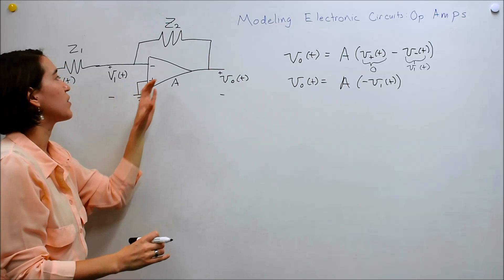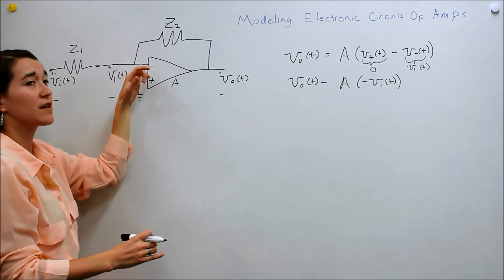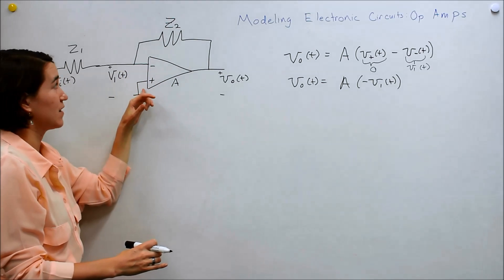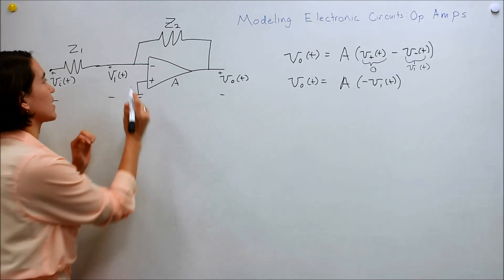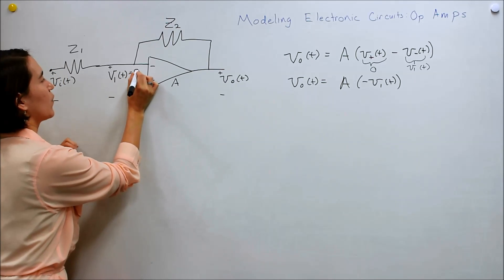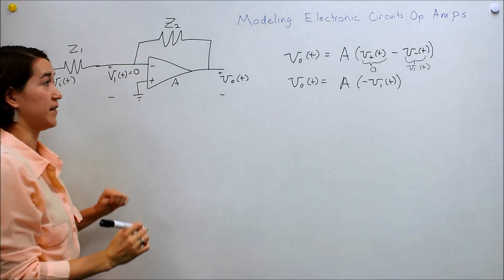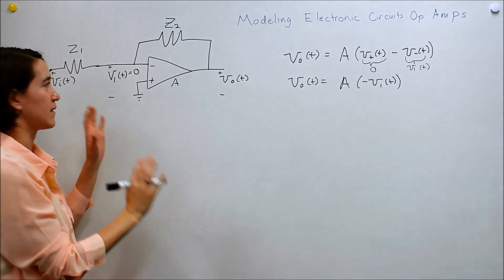But with this setup, if you remember, the op amp does whatever it needs to do to make sure that this voltage is the same as this voltage. So what that means in this circuit is that this voltage will also be ground. It will also be zero. So with this setup, let's do some analysis.